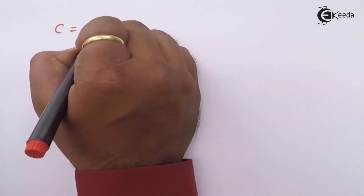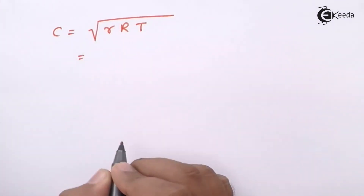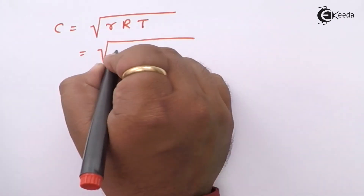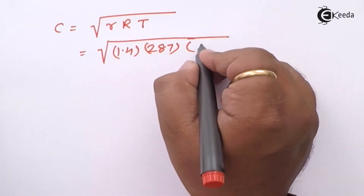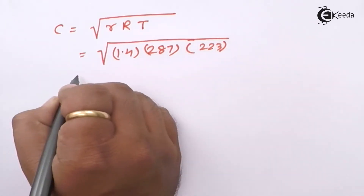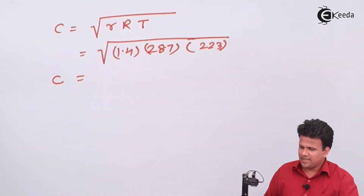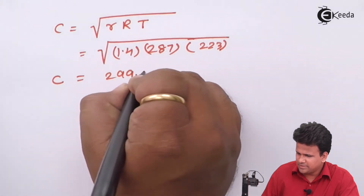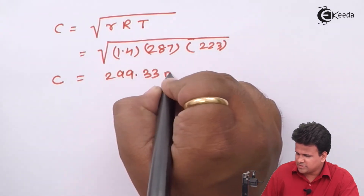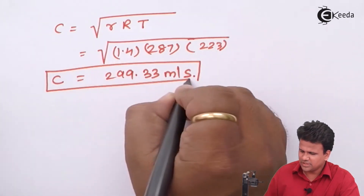C equals square root of gamma into R into T. This gives us the square root of 1.4 into 287 into 223. This calculation gives us the velocity of sound in air as 299.33 meters per second.